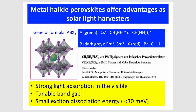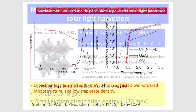You can tune the bandgap of this material either by changing the cation or by changing the halide. This way you have the opportunity, depending on building integration requirements, to have different colors. There is strong absorption in the whole visible region. Silicon solar cells absorb between 400 to 1200 nanometers, while perovskite solar cells absorb only from 400 to 800 nanometers. As I already mentioned, the small exciton dissociation energy is as small as 30 milli-electron volts — this is the beauty of perovskite and what makes it so efficient.